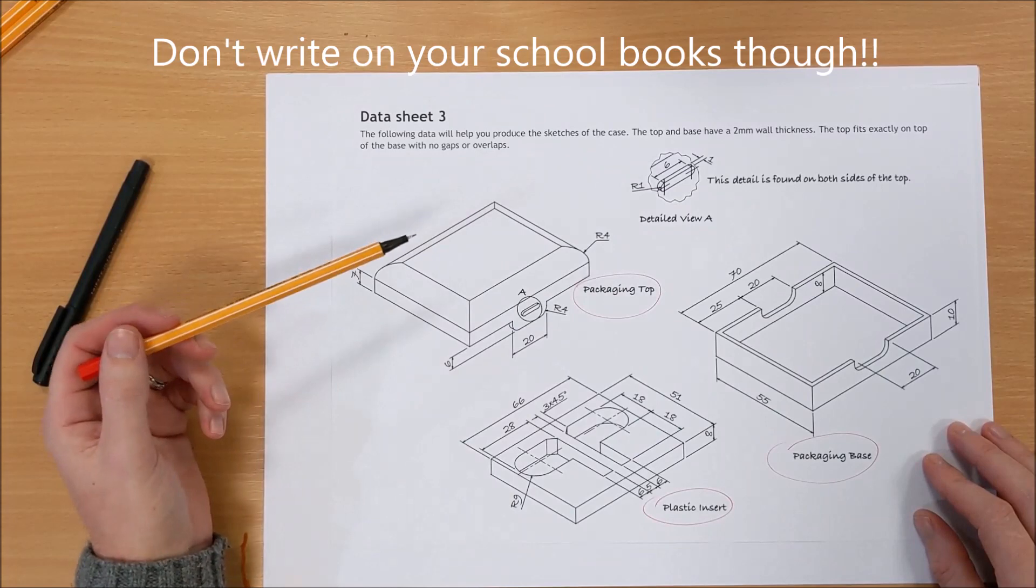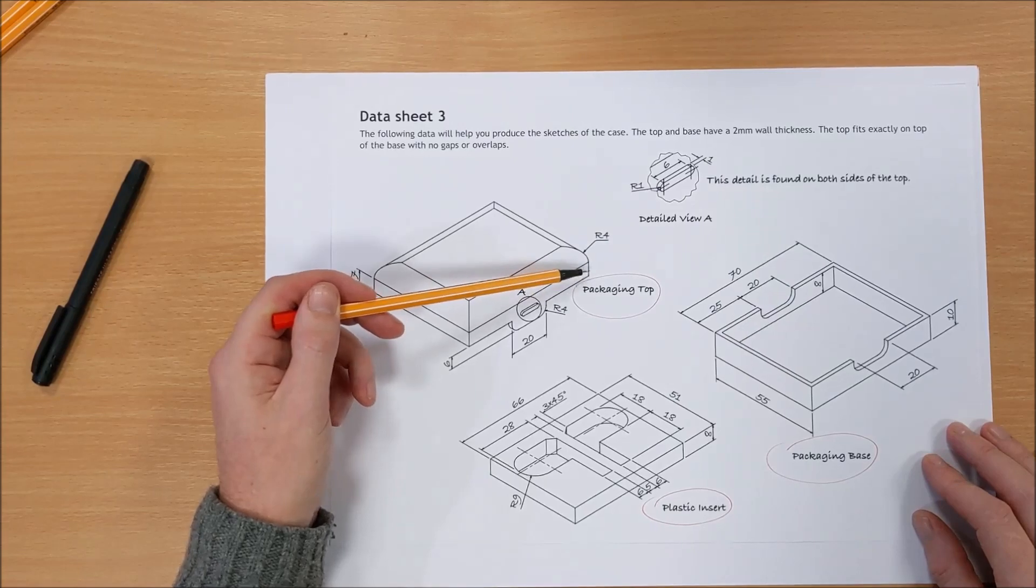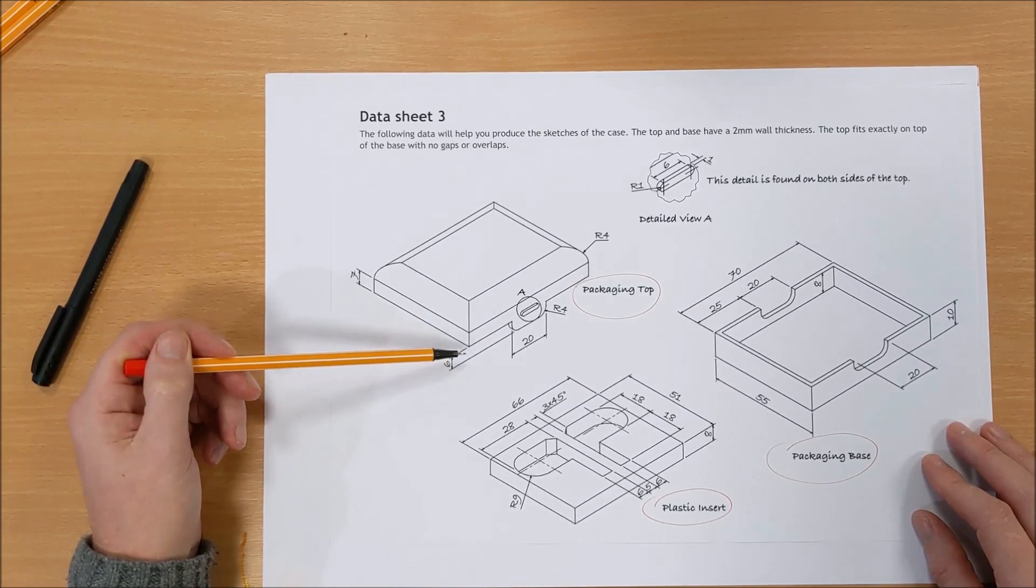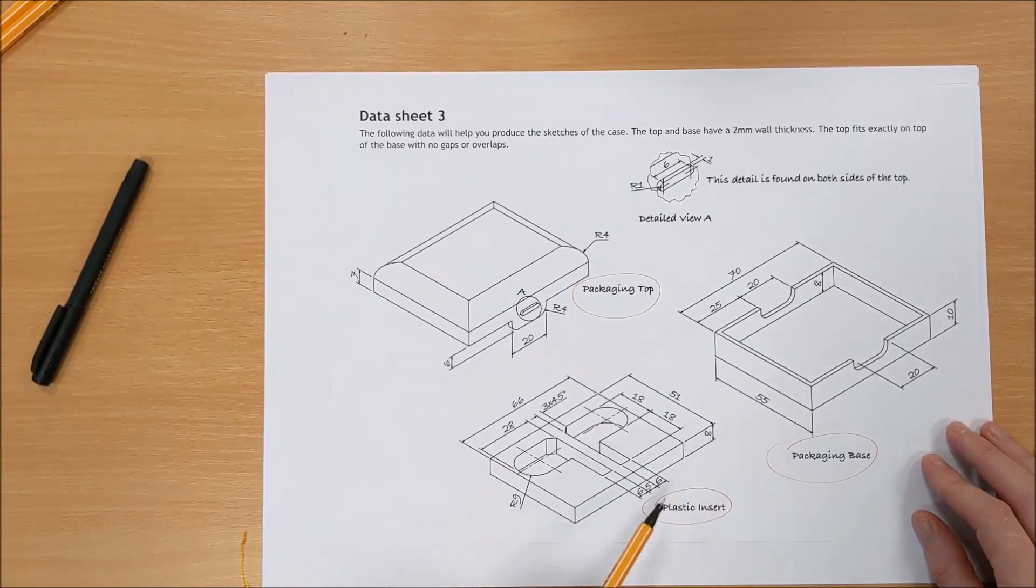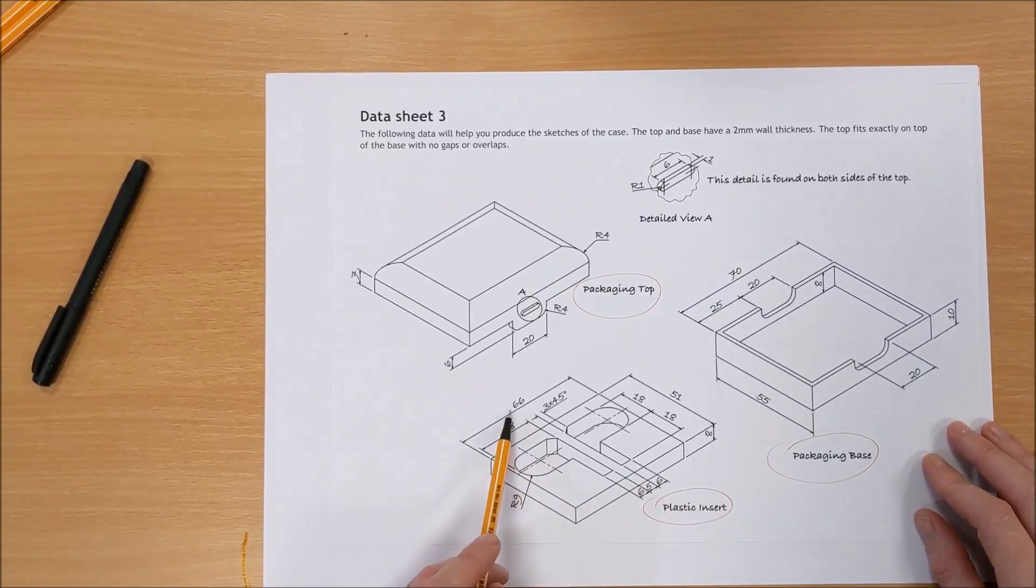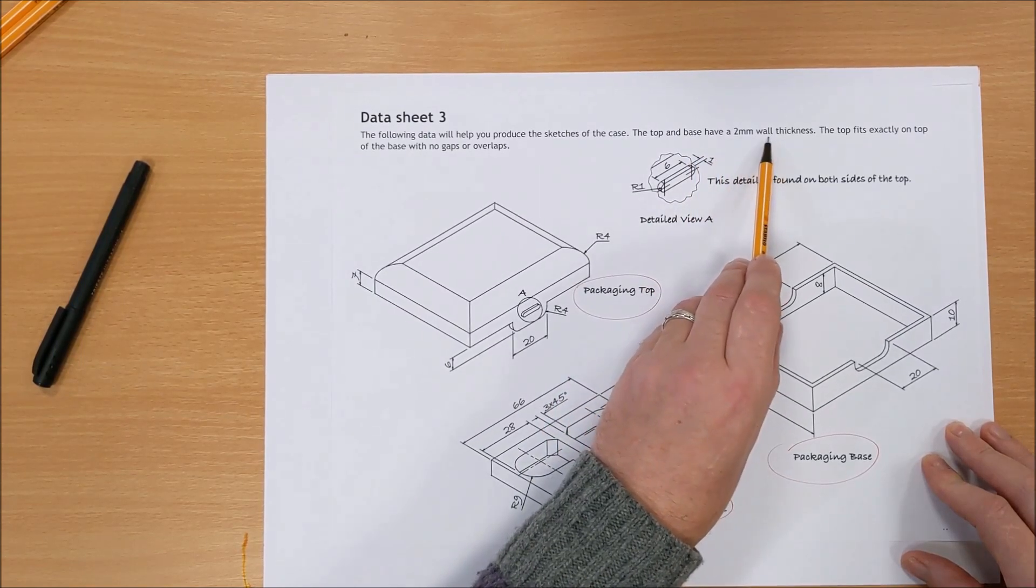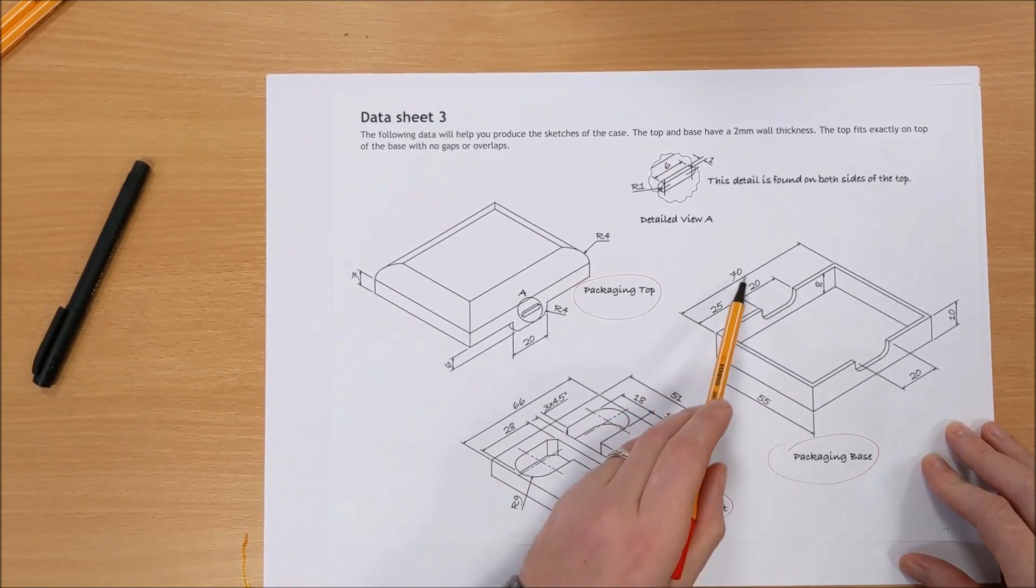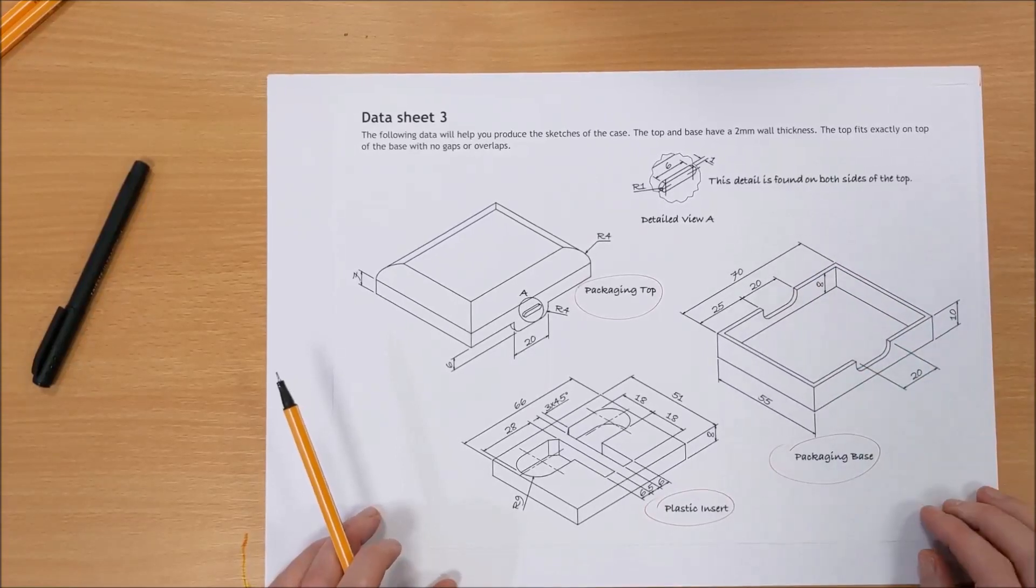Now what we see here is the top. It's got a curve which is radius 4, and then that size there is 7, and then that size there is 6, so 17 millimeters in height. The base is 10 millimeters in height, the insert's 8 millimeters in height so that fits inside there. You notice that 66 tells you the top and the base have a 2 millimeter wall thickness, so that's 2, that's 2, adds to 4 from the 70, gives you your 66.